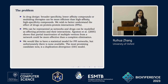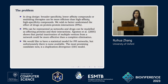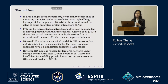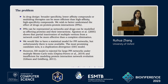We would like to have a statistical model for PPI networks, but unfortunately none is currently available. The most promising candidate is the duplication divergence model; however, it is still rejected for large networks under multiple Monte Carlo tests and is insufficient for modeling protein interaction network evolution.